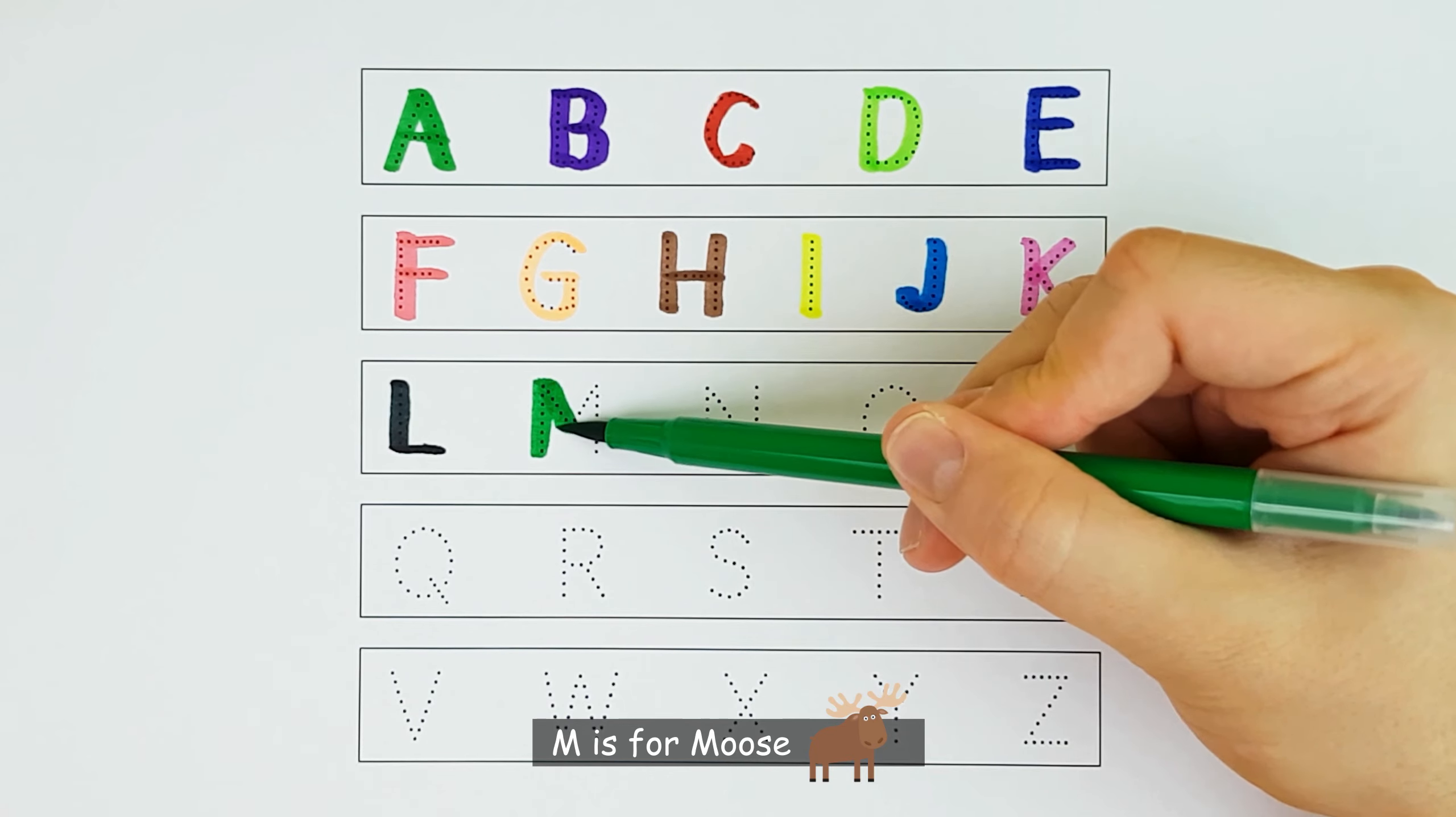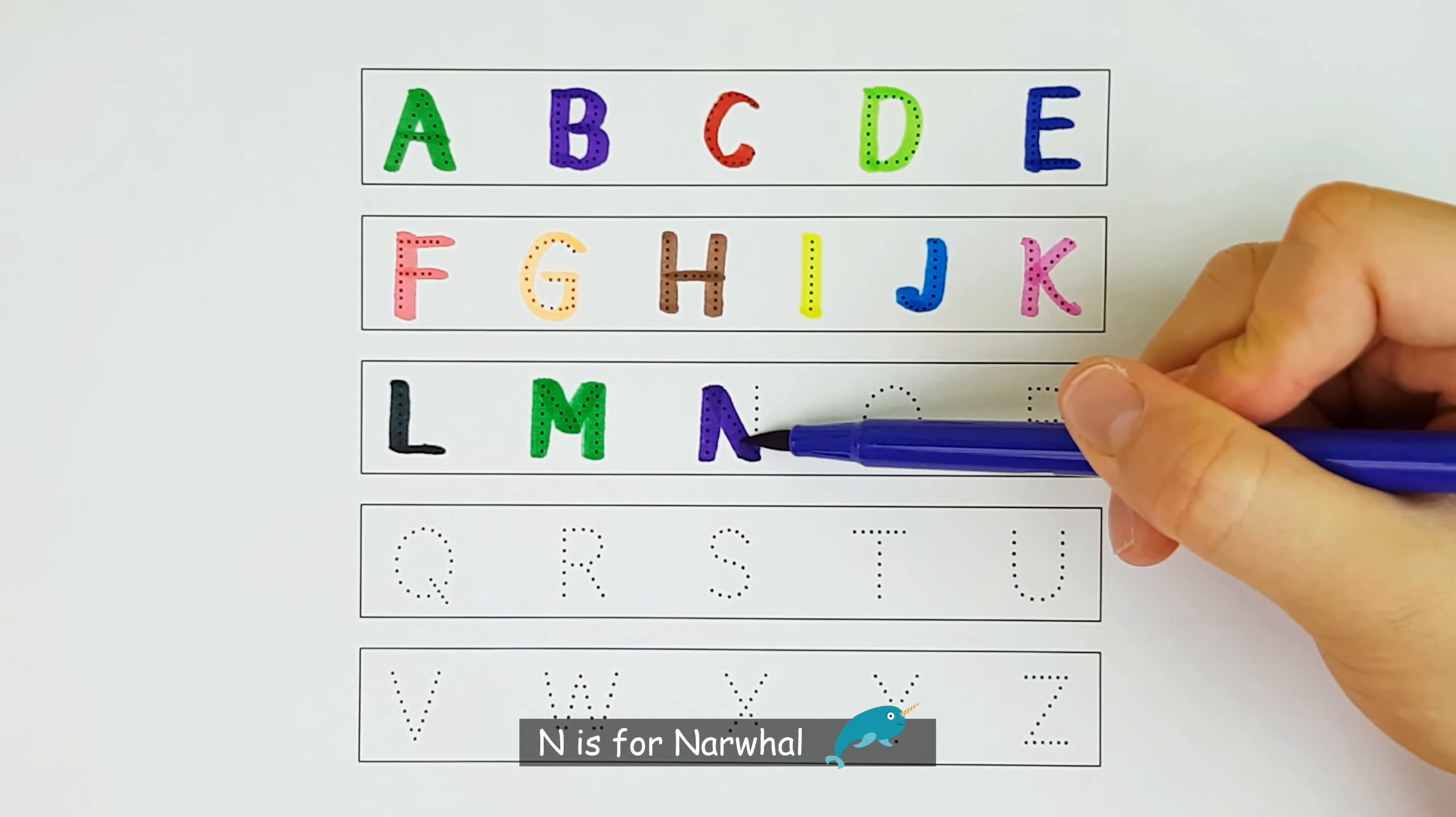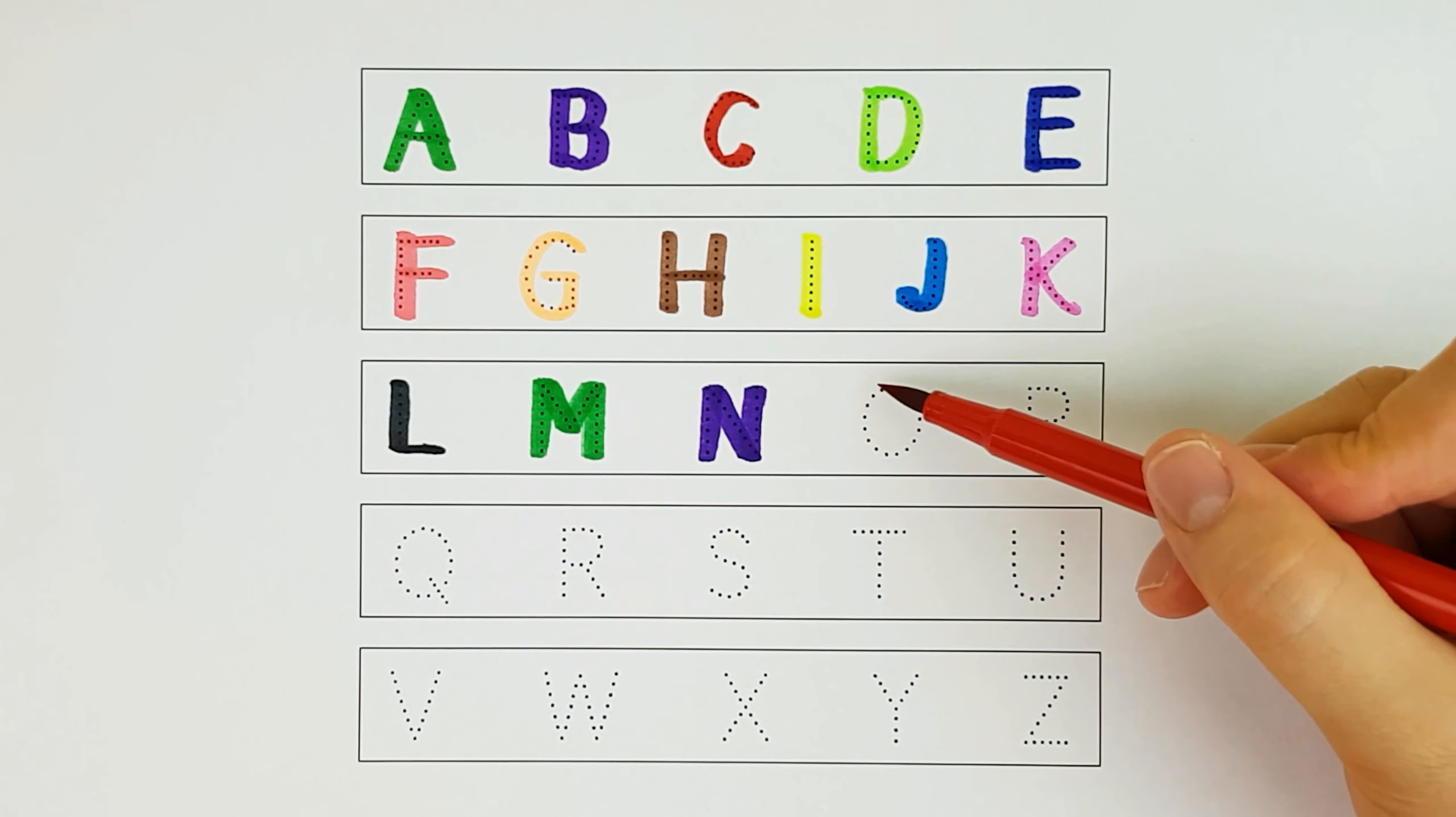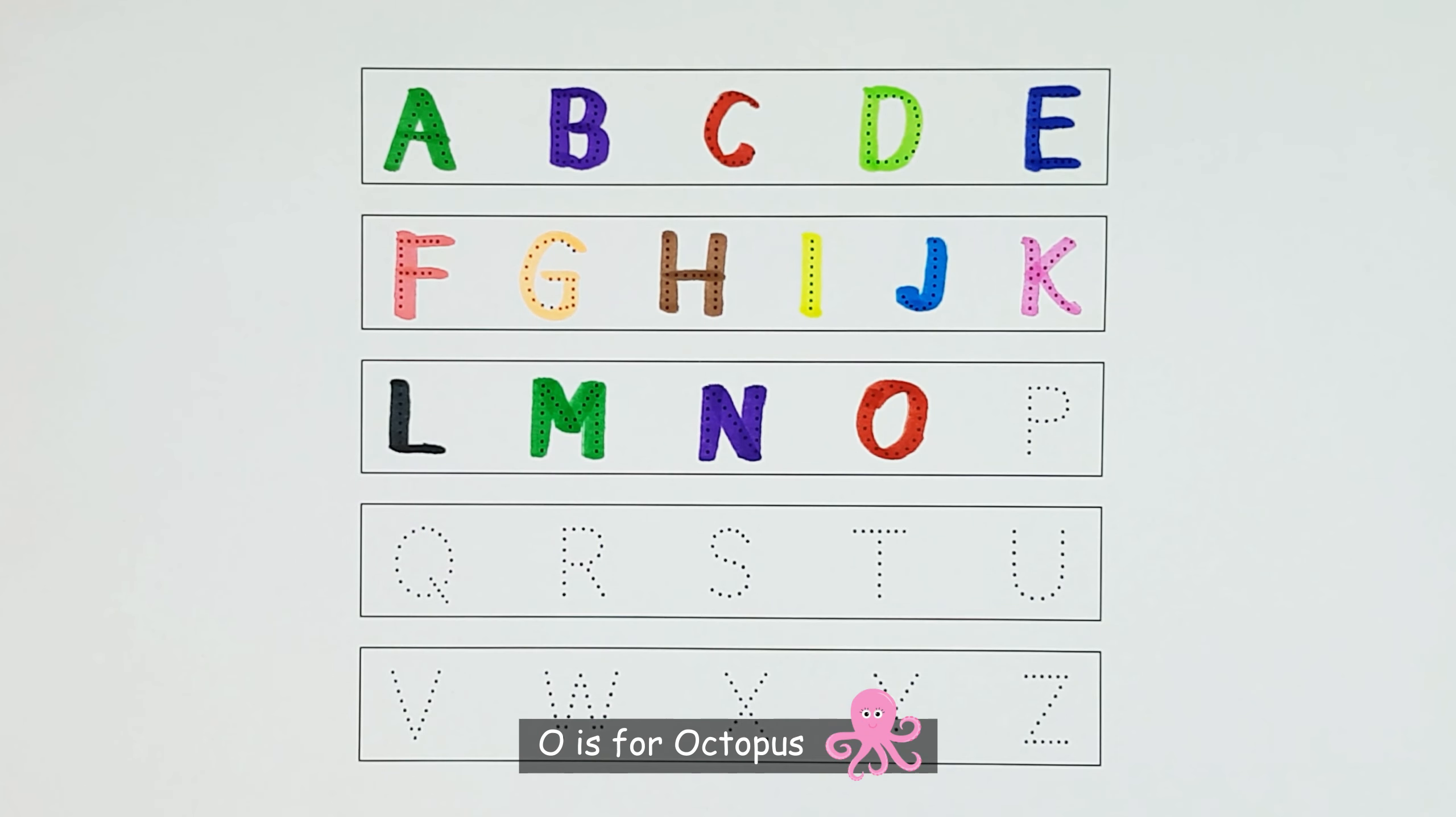M. M is for Moose. N. N is for Narwhal. O. O is for Octopus.